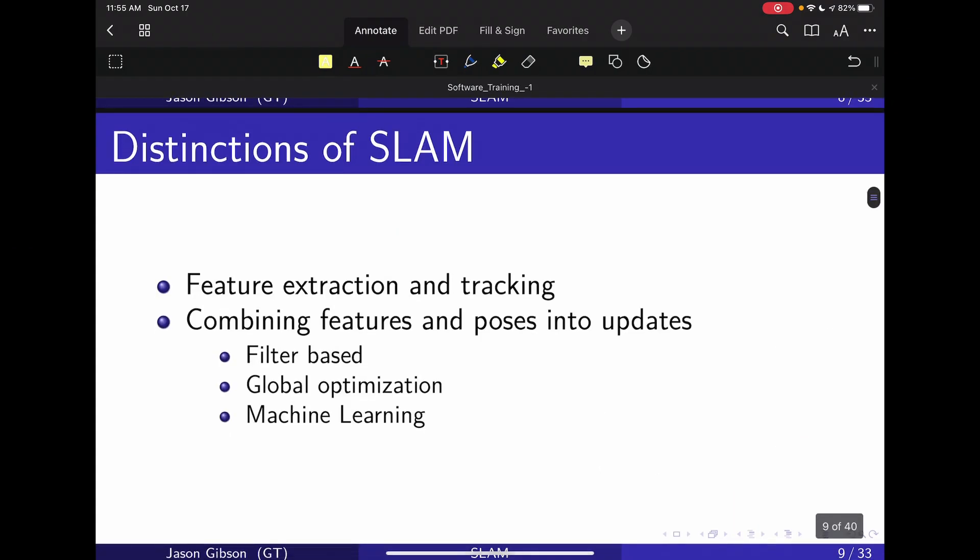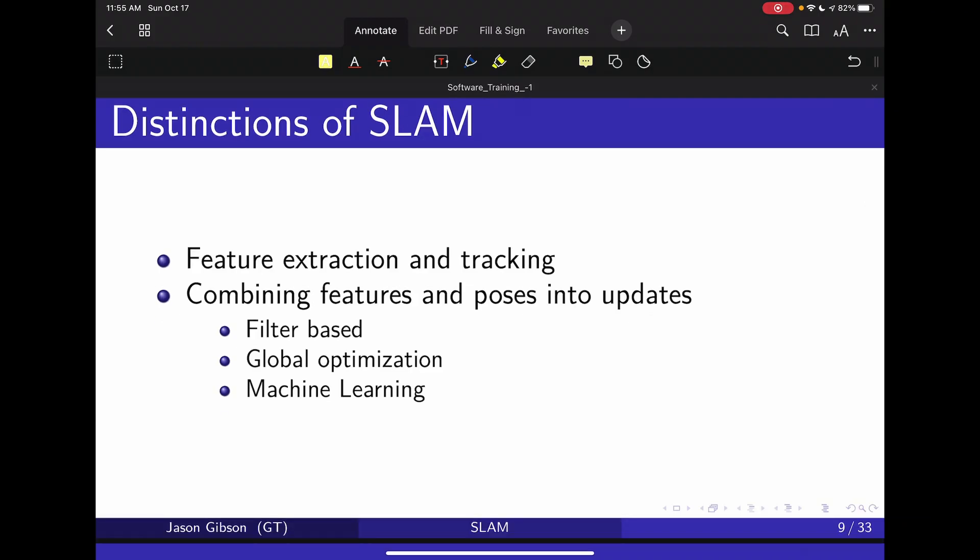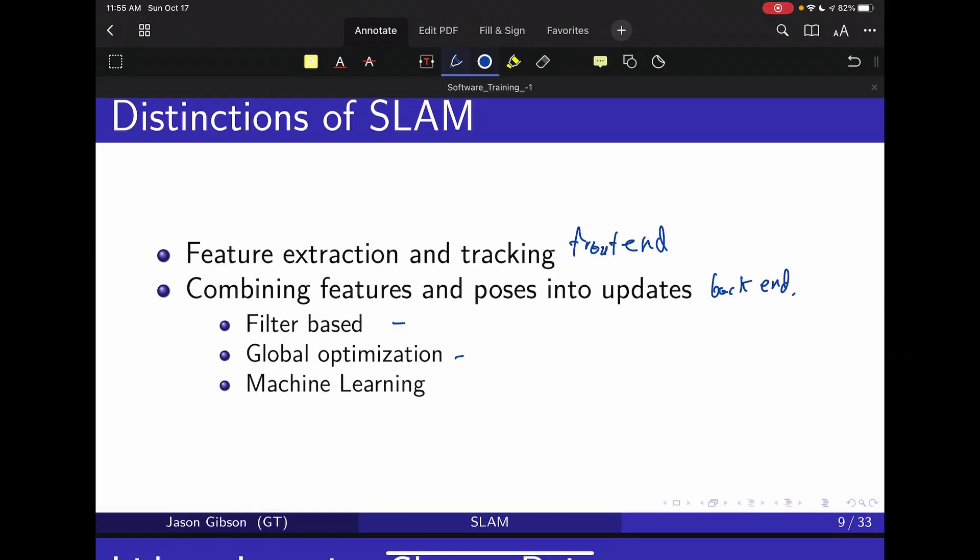So there are a couple of sections that we can separate the SLAM problem into. I've kind of alluded to it, but here they are specifically. There's feature extraction and tracking, so this is what people will typically call the front end of their SLAM problem. And then there's how do we take those features and combine them into pose updates and updates for the landmarks. This is referred to as the back end of a SLAM problem. There are lots of different front ends and we're going to cover a couple of them, and there are a lot of different back ends. There are filter-based back ends which we'll talk more about next week when we talk about the Kalman filter. There's global optimization techniques that rely on ideas similar to what you use in your particle filter, and we have machine learning techniques that are evolving currently in literature.